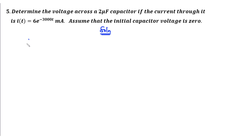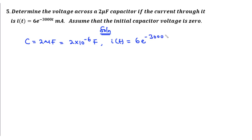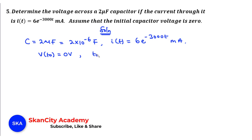First of all, we have the capacitance given as two microfarad, that is basically two times ten to the power negative six farads. We have the instantaneous current through the capacitor that is I of t, which is simply six times e to the power negative 3000 t milliamperes. We are also asked to assume that the initial capacitor voltage is zero, meaning v of t naught equals zero volts, and this happens at time t naught equals zero seconds.